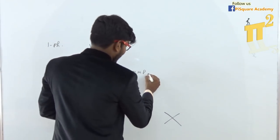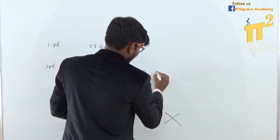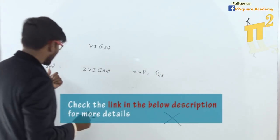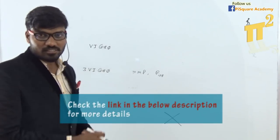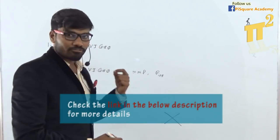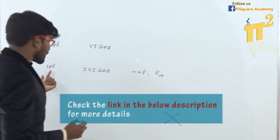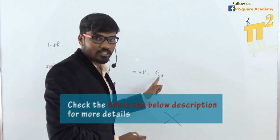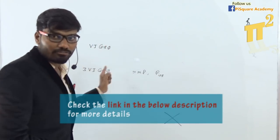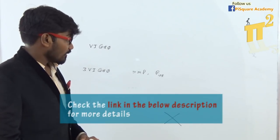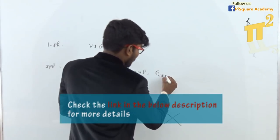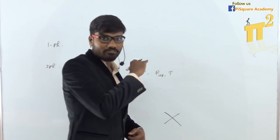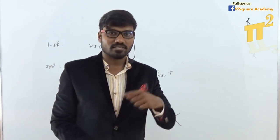And further, you will say instantaneous power for 3-phase is constant. So at each and every instant, though these 3 phases are changing with respect to time, the instantaneous power of all 3 phases will be constant. And that will lead to producing a constant torque — not a pulsating torque.